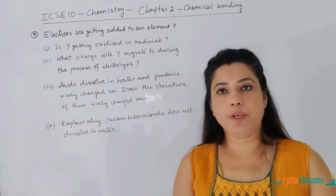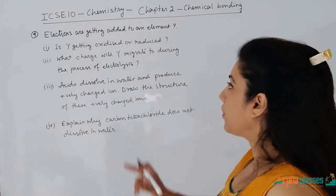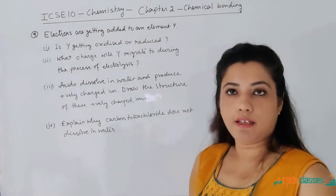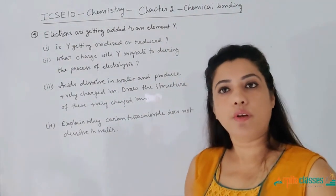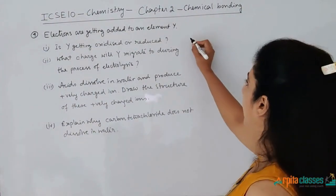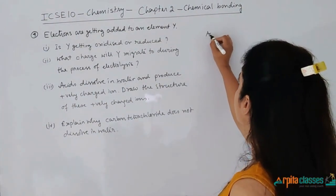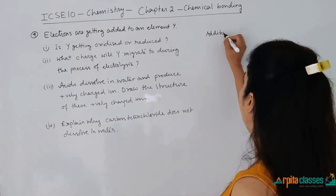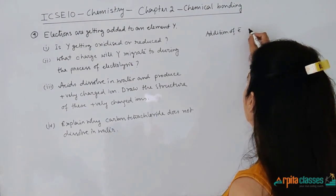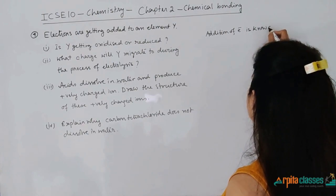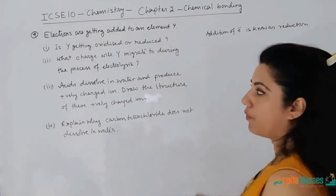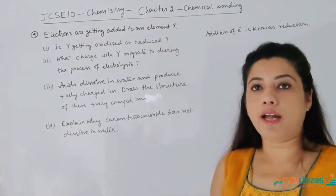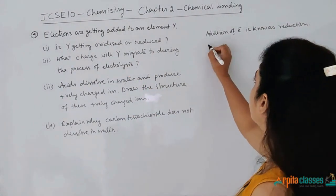The fourth question: electrons are getting added to an element Y. Is Y getting oxidized or reduced? We know that addition or gain of electrons is known as reduction. So if electrons are getting added to Y, then Y gets reduced.